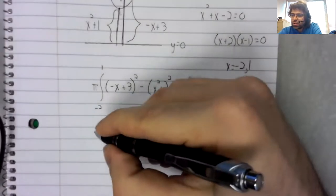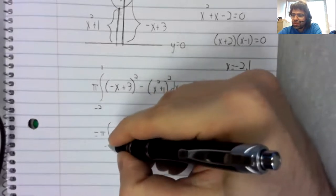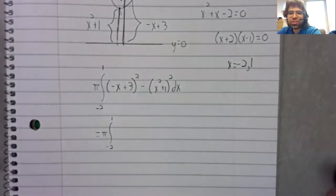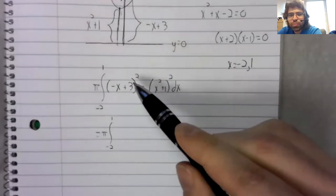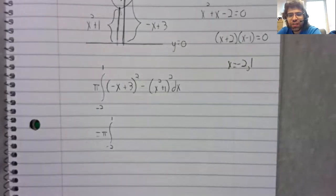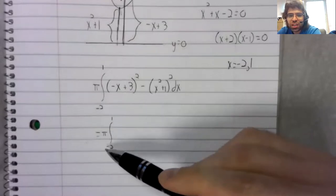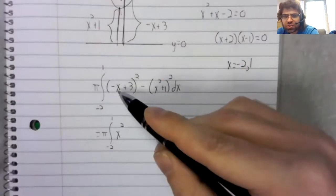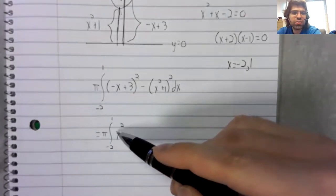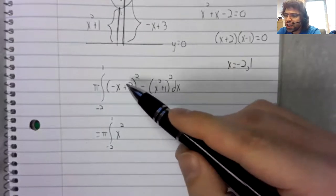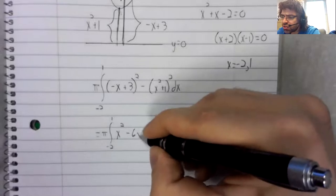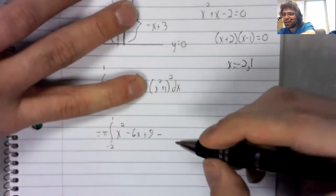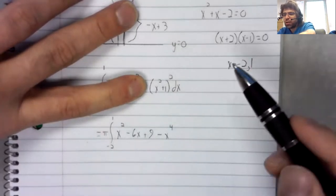And now we've done the kind of interesting work. Now we just have to clean this up. We'll need to foil both of these. And then we'll take the antiderivatives and stick these numbers in and subtract. So negative x times negative x is positive x squared.